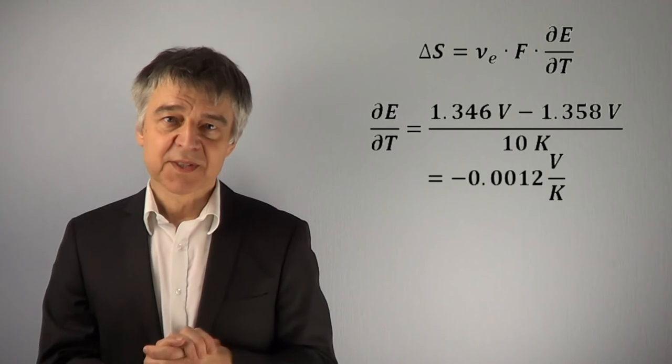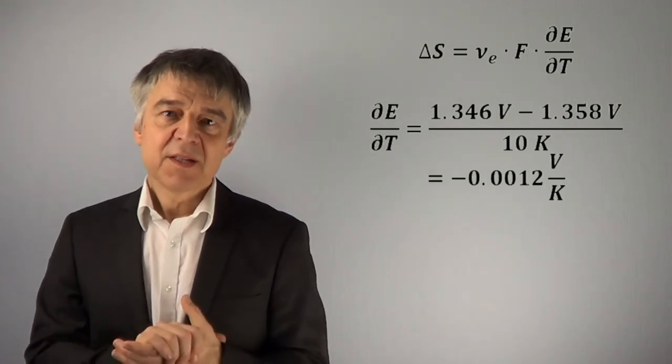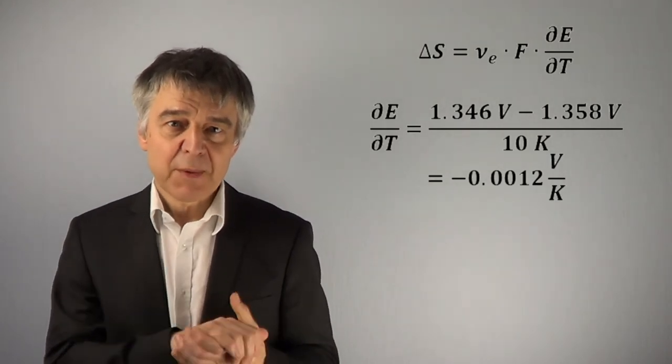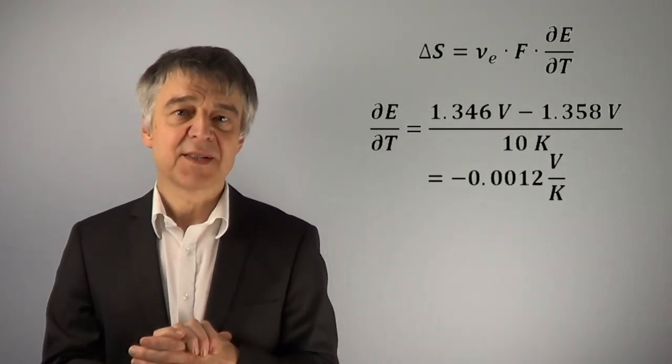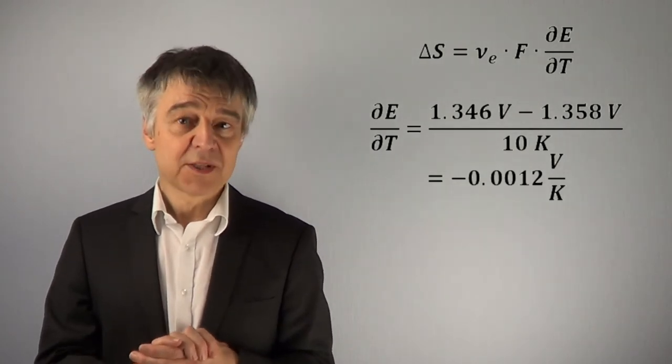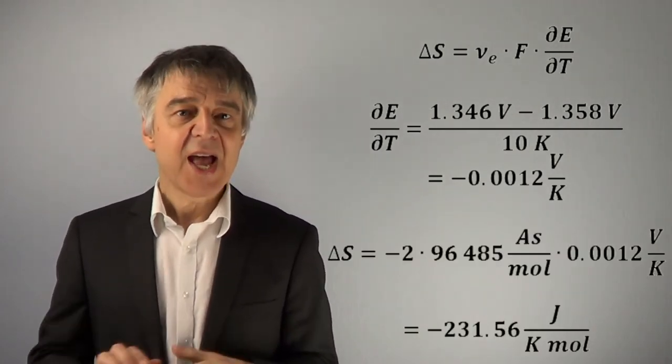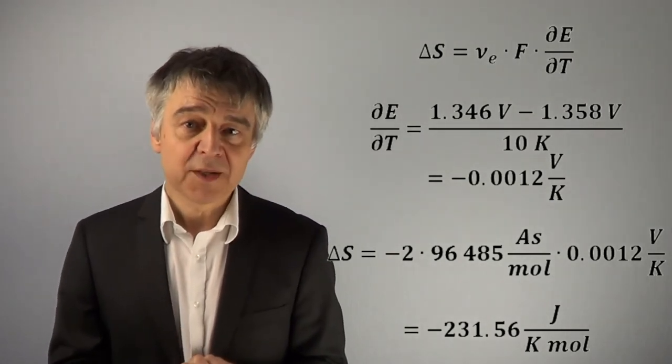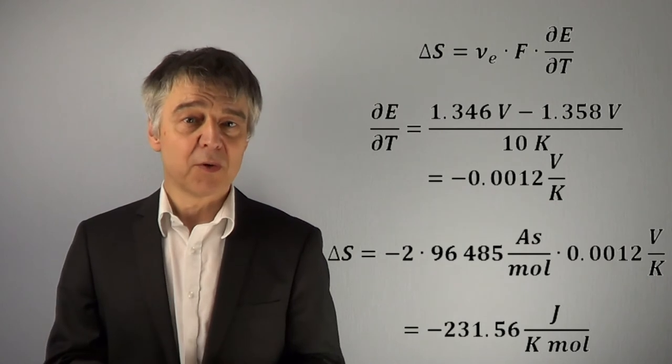The entropy of a cell reaction is coupled to the temperature dependence of the open circuit voltage. In our case, the temperature gradient is -0.0012 V/K and gives a reaction entropy of -231.56 J/(mol·K).